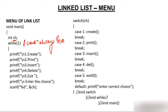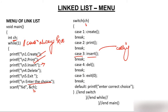It's similar to when you go to a restaurant — in a menu you have dish one, dish two, dish three, and you order accordingly. We have already done the create function and the print function. Now our job is insert, which is option three. You press three, ch will have three, switch jumps to case three, and you call the insert function.